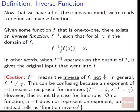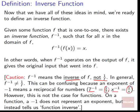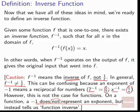Caution: f with that negative one in the top right means the inverse of f, not one over f. This can be confusing because in algebra, negative one can mean a reciprocal for numbers — seven to the negative one becomes one-seventh, x to the negative one becomes one over x. But for functions, f⁻¹ is not an exponent; it is a symbol that says 'inverse.' In general, f inverse is not the same thing as one over f. The inverse of f is normally not the reciprocal of f.